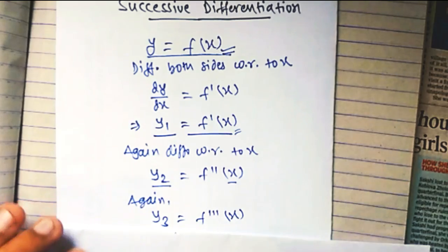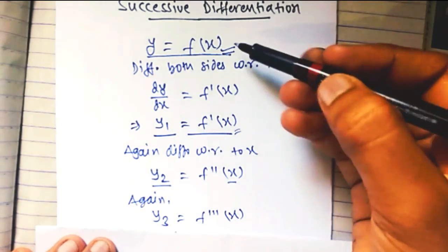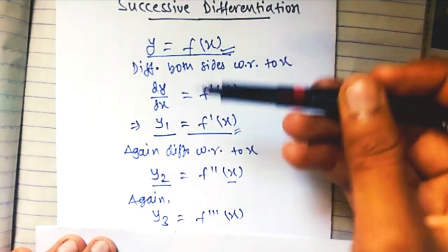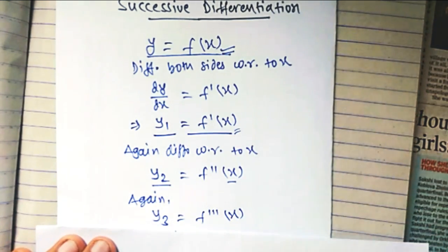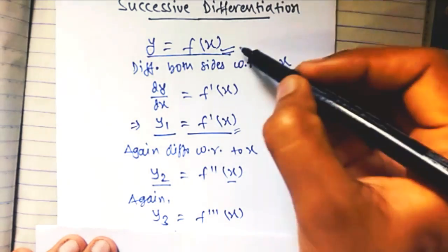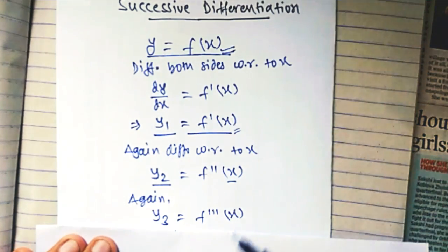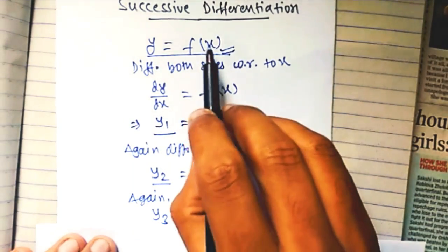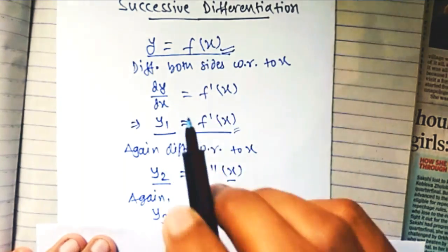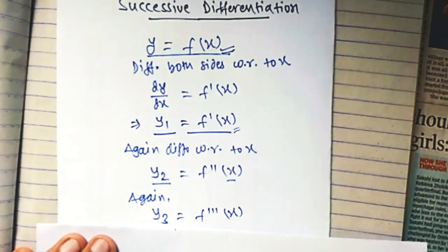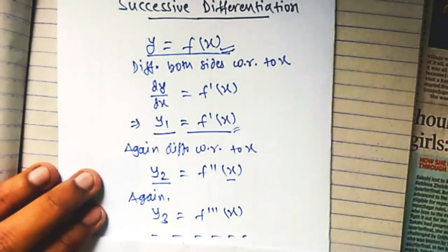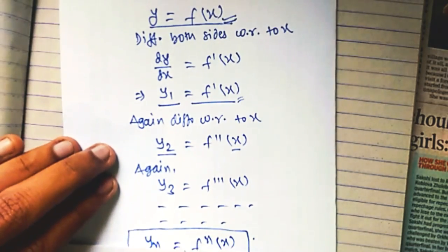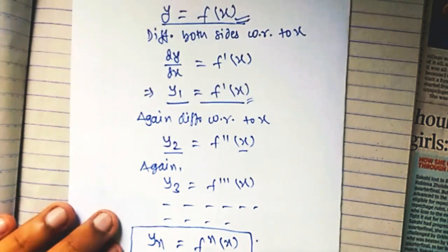Here you can see that the given function is differentiated successively, and the process of differentiating a function successively is called successive differentiation. Our main goal is to find the nth derivative — that is, what we get when we differentiate the given function n times. Further differentiating, we get yn.